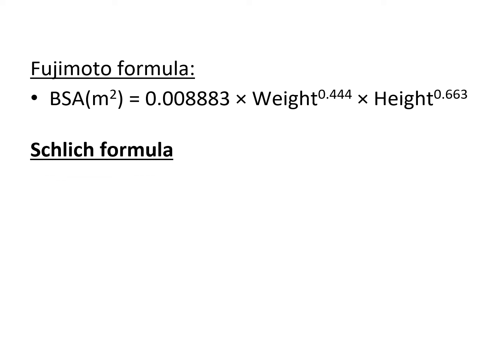For Schlich formula, the BSA for men and women use alternative equations. For women, we calculate it as weight raised to the power of 0.463 and height raised to the power of 1.08 multiplied by constant 0.000975482.